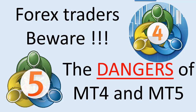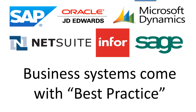You'll understand more as we move into this video. As an introduction: when a large organization puts in an enterprise-wide system to run their business, they use huge systems like SAP, Oracle, JD Edwards, and NetSuite. They do that because those systems come with what we call best practice — they already tell the business the way that efficient businesses run, whether it's the warehousing system, accounts receivable, or whatever. These accounting systems have best practice built into them, which is very valuable.